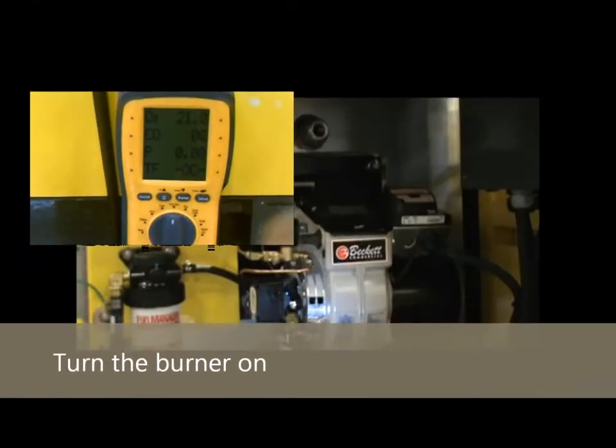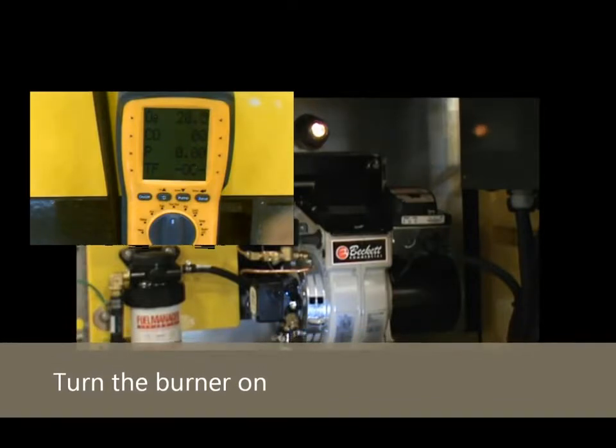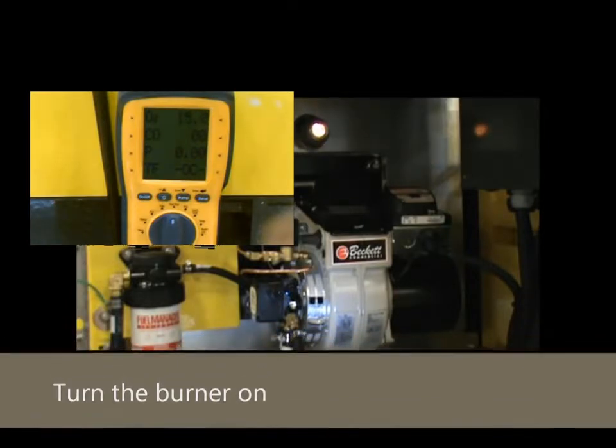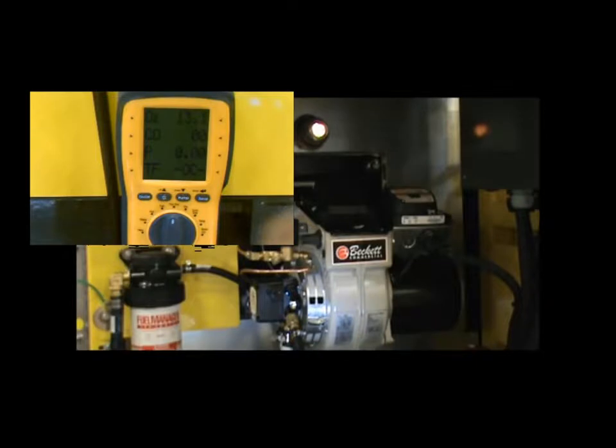When the burner starts, the oxygen level drops from 21%, or atmospheric level, to an unknown number. This number is the percentage of extra oxygen in the exhaust gas. This is the oxygen that has not been consumed in the combustion process. Wait for your O2 levels to stabilize before making any adjustments.